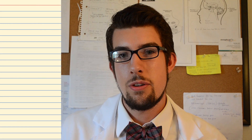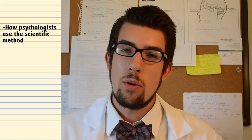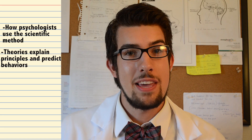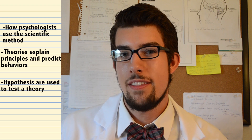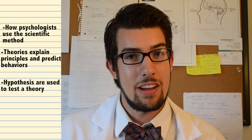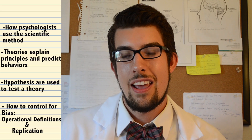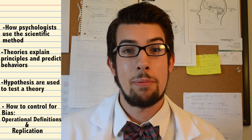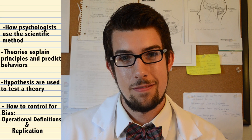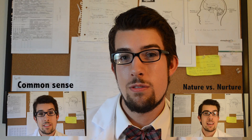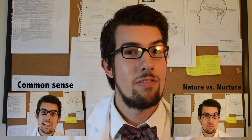In this video, we discussed how psychologists use the scientific method. We talked about how a good theory explains principles and predicts behaviors. We also talked about how a hypothesis is used to test a theory. And finally, we examined how biases occur and why operational definitions and replication are so important. Be sure to check out my other Psychology 101 videos, and keep a look out for future videos in which we look into the different methods we use to test hypotheses and refine our theories.